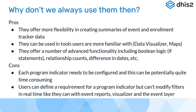There are advantages as well as some disadvantages of using program indicators. The advantages are they offer more flexibility in creating summaries of events and enrollments in tracker data. They can be used in tools users are more familiar with, such as the data visualizer and maps applications in DHIS2, which you already use for aggregate data. This program indicators concept can be used in aggregate tools as well, not only in tracker tools — you can browse through program indicators and do analysis using the data visualizer and maps. They offer advanced functionality including Boolean logics like if-statements, relationship counts, differences in dates, and more.